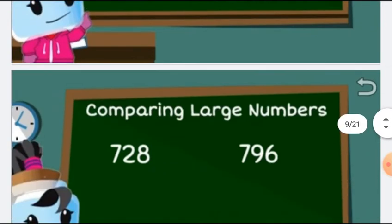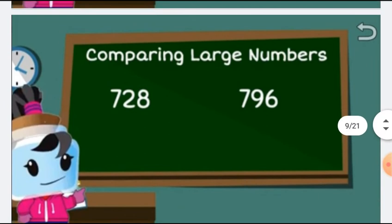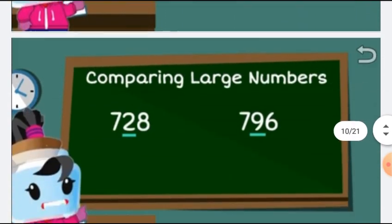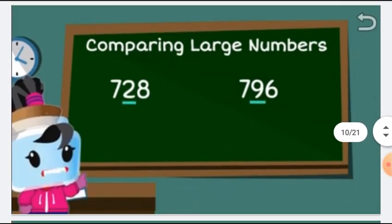The next question is comparing large numbers again. We have two numbers: the first is 728 and the second is 796. Both numbers have 7 at the hundreds place. Now we compare the tens digit. In the first number, the tens digit is 2, and in the second number the tens digit is 9.